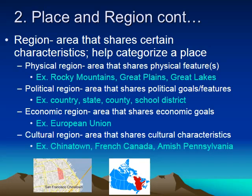Cultural regions are the last region type, and they're areas that share cultural characteristics. A great example in our own country would be Chinatown in San Francisco — a neighborhood that shares the characteristics of Chinese culture. Another great example is French Canada, where within the English-speaking country of Canada there is a region that shares the characteristic of speaking French as their common language.